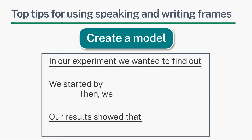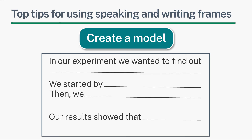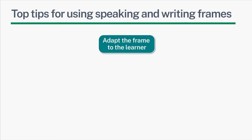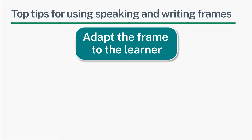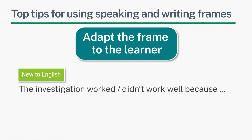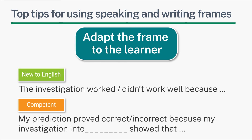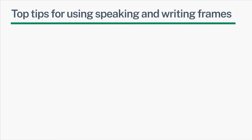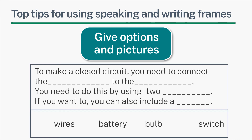Finally, take away the rest of the model answer and use this as your speaking or writing frame. You might also want to adapt speaking and writing frames for your learners' different levels of language proficiency. For example, for a learner who is new to English, you could use the sentence starter: 'The investigation worked or didn't work well because…' Whereas for a learner who is competent, you could use more complex language such as: 'My prediction proved correct or incorrect because my investigation into… showed that…' You might also want to provide support by giving learners options for the words, and for further support, you could also include pictures.